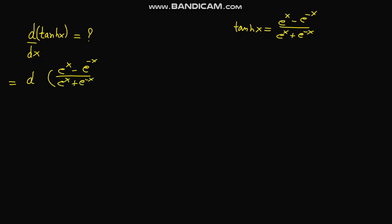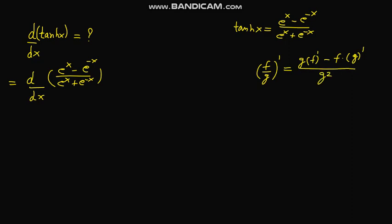We know that the derivative of f upon g equals g times the derivative of f, minus f times the derivative of g, upon g squared. So now we apply that quotient rule property here.